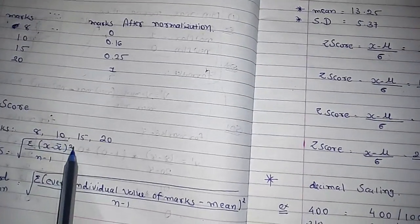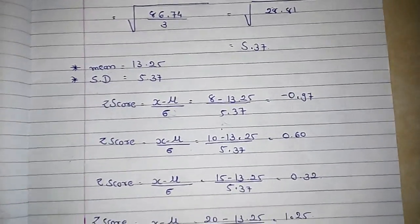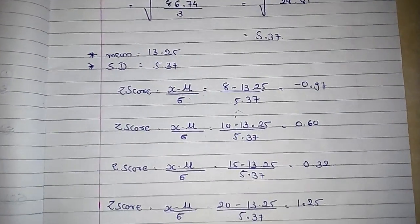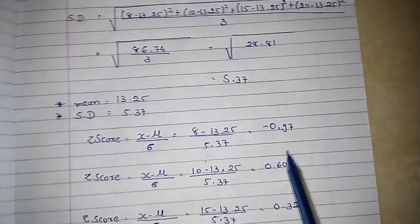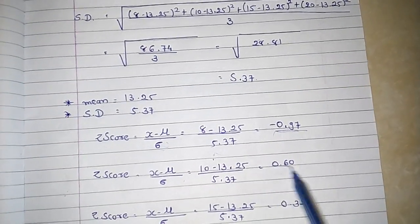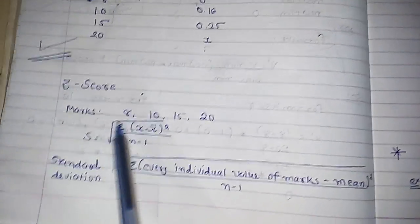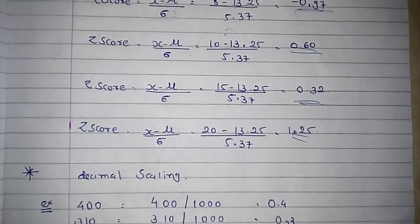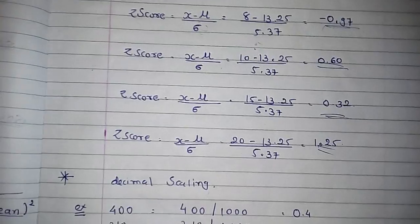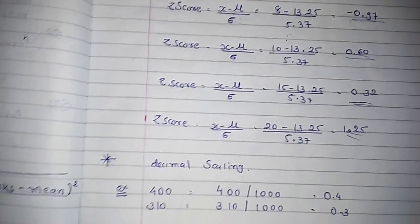You have to find out the z-score for all the values — for 15 as well and 20 as well. This gives you the z-score for this particular dataset. Now we will discuss about decimal scaling.